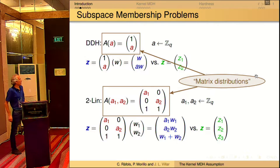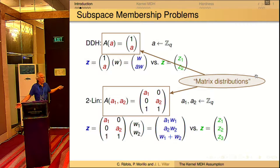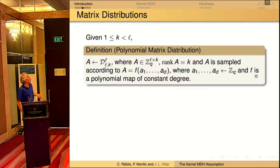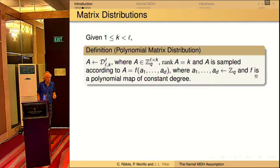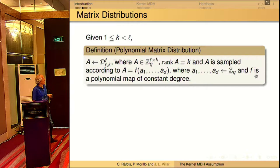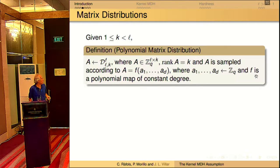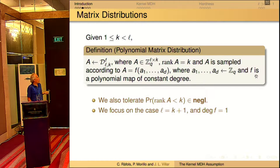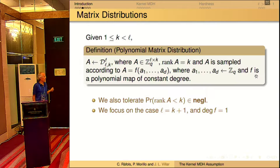This led us to define what we call a matrix distribution, that is just a collection of matrices depending on some parameters — a probability distribution among the matrices. All the matrices have the same size, L times K, with K less than L. We consider that the matrices are sampled using a polynomial map of constant degree, meaning the degree does not depend on the security parameter. We actually restrict to the case L equal to K plus 1, so the matrices are almost square, because otherwise we have fewer algebraic tools to evaluate the hardness of these problems.